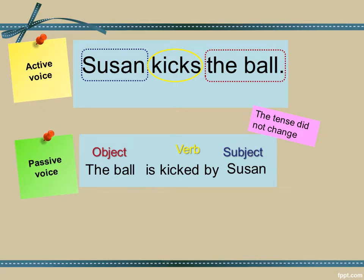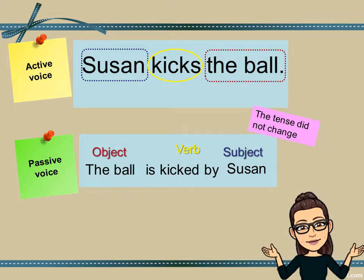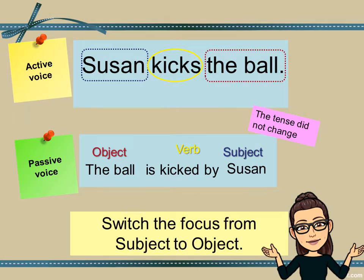You might wonder why sometimes we use active voice while other times we use the passive voice, and that's to shift the focus. In the first sentence, the focus is on Susan since she is mentioned first. In the second sentence, the focus is on the ball since the ball is mentioned first.